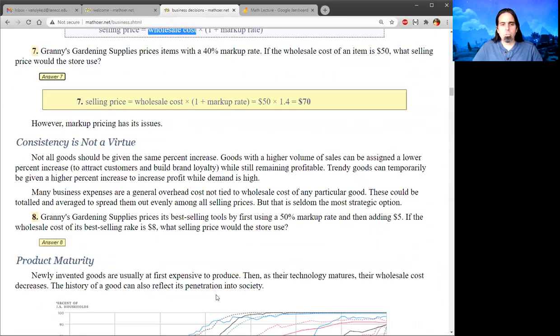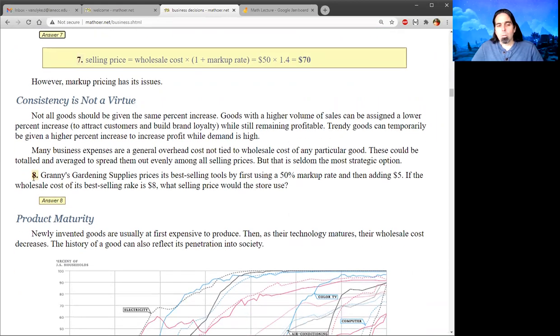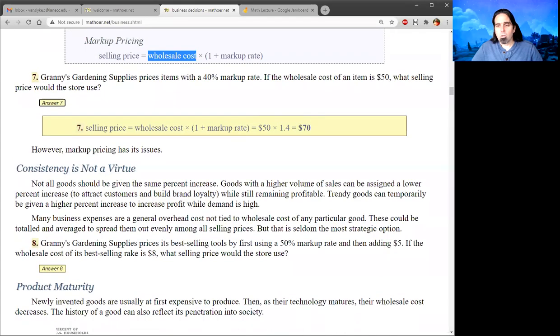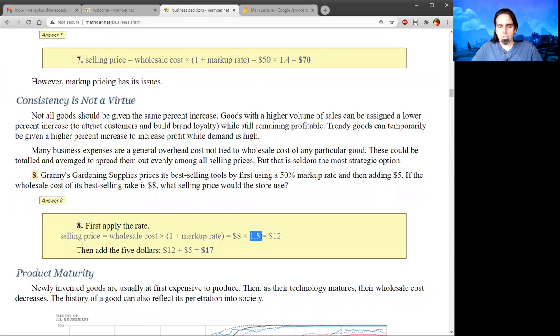Markup pricing has a few issues. Not all goods should be given the same percentage increase. Goods that have a higher volume of sales can be assigned a lower percent increase to attract customers, but still be profitable. If something is trendy, you can charge more for it temporarily. So problem eight gets a little more complicated. The best-selling tools, they use a 50% markup rate and then add $5. So if a rake is $8, what would they do? First, we'll multiply it by 1.5. What is 8 and half of 8? That would be 12. And then we add $5 and we get 17 as our final answer.